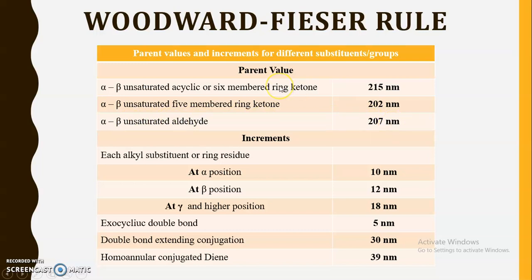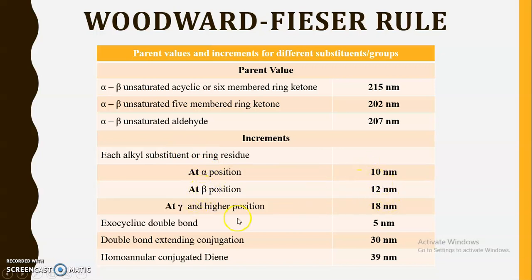Remember these values are only applicable for alpha, beta unsaturated carbonyls. If only carbonyls are there and the alpha, beta position is not unsaturated, then we cannot use this particular rule. For increments: if ring residues or alkyl substitutions are present at the alpha position, add 10 nanometers; if at the beta position, add 12 nanometers.